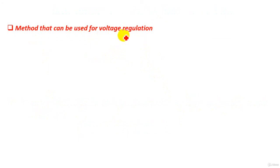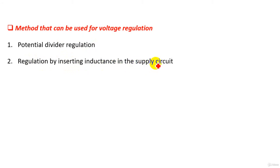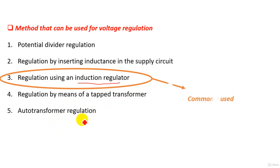There are many methods that can be used for voltage regulation. The first is potential divider regulation, based on the principle of the potential divider using two or multiple resistors. The second is regulation by inserting inductance in the supply circuit. Third is regulation using an induction regulator. Fourth is regulation by means of a tap transformer, using transformer taps to obtain variable voltage. Fifth is auto transformer regulation. The induction regulator is the most commonly used method, as it can provide smooth variation of voltage and is also compact and small in size.